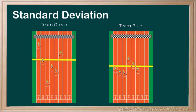Another way to look at this is from a bird's eye view of the track. In yellow, we have the mean for both teams. The runners of the green team are very spread out around the mean, meaning it has a high standard deviation, and the members of the blue team are clustered around the mean, meaning it has a low standard deviation.